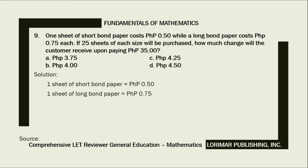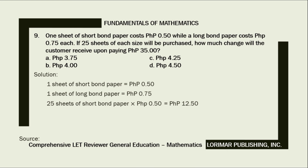One sheet of short bond paper costs 50 cents while one sheet of long bond paper costs 75 cents. To solve this problem, we multiply 25 sheets of short bond paper by 50 cents and 25 sheets of long bond paper by 75 cents, then add all the products and subtract that sum from 35 pesos. That gives us 25 times 50 cents equals 12.50 pesos, and 25 times 75 cents equals 18.75 pesos.